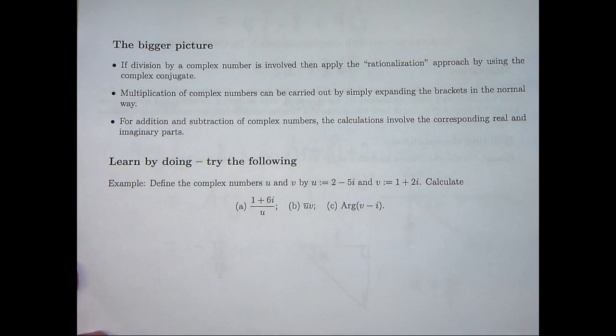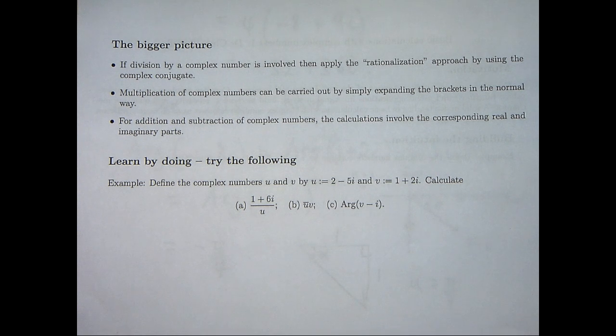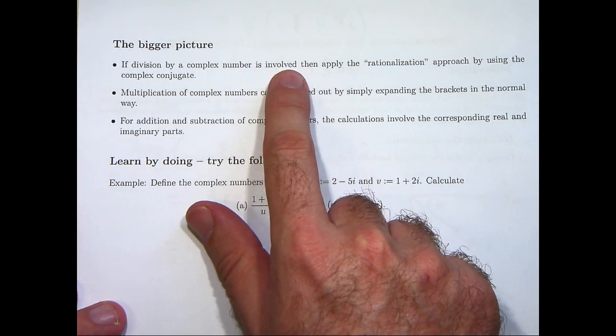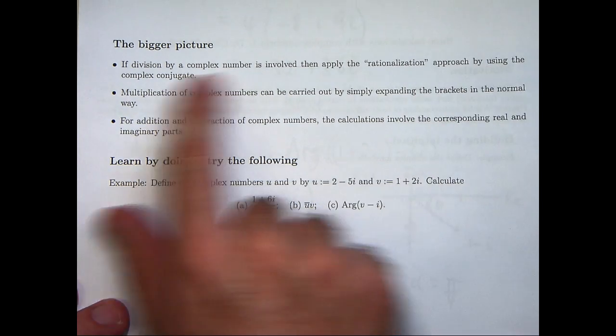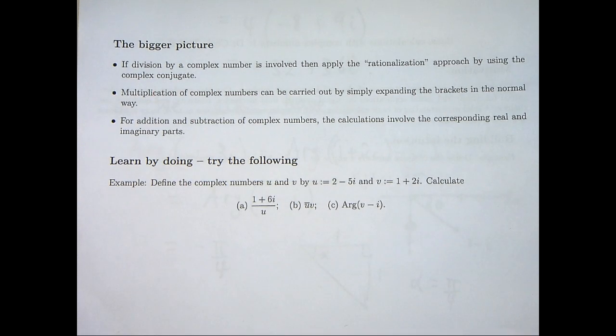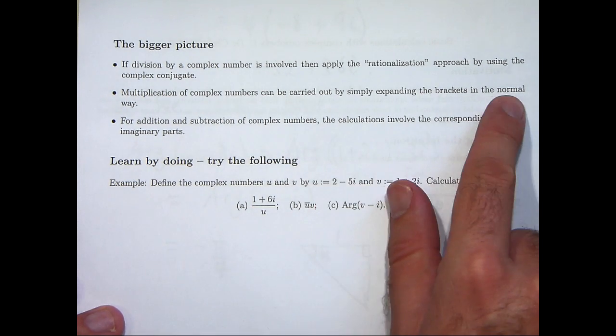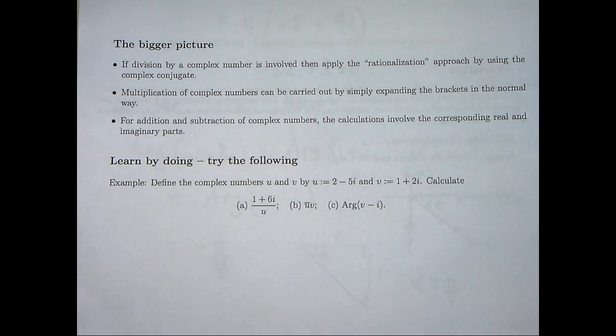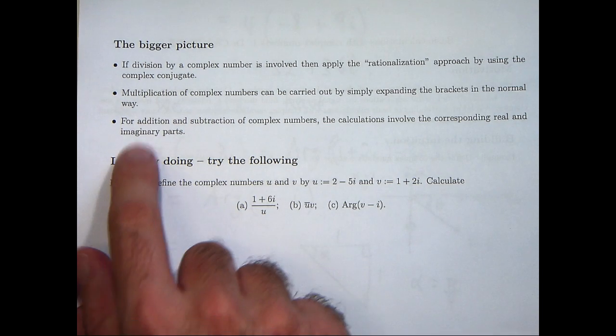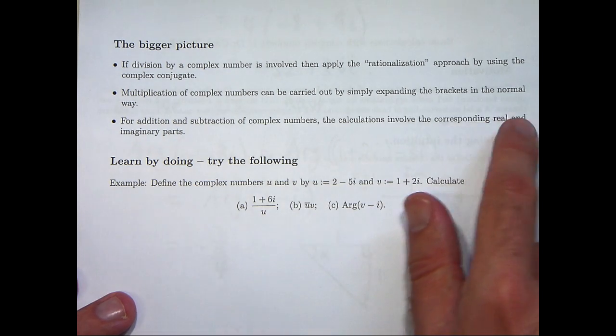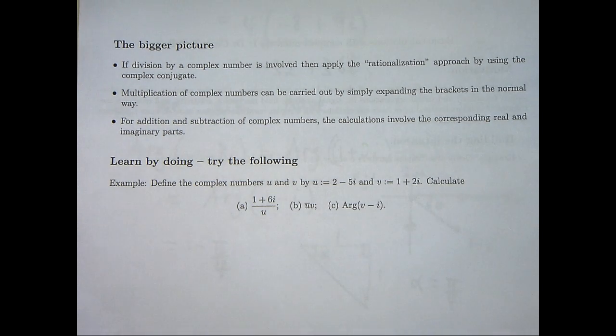What are some ideas that you can use for general calculations and operations? Well, if you're dividing by a complex number, then in general, a good idea is to apply the rationalization approach by using the complex conjugate as we did in part A. Multiplication of complex numbers can be carried out by simply expanding the brackets in the normal way and remembering that i squared equals negative 1. And the easiest operations of all are addition and subtraction of complex numbers. And you just add or subtract the corresponding real and imaginary parts.